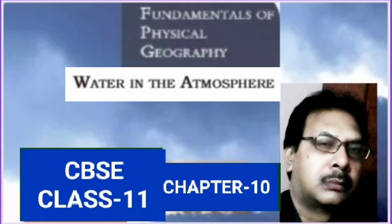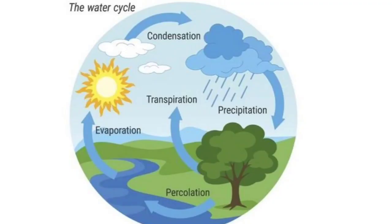As a result of the decrease of temperature in the lower layers of the atmosphere with increasing altitude, condensation of water particles takes place. Condensation is the process by which the water vapour in the atmosphere gets converted into water droplets.